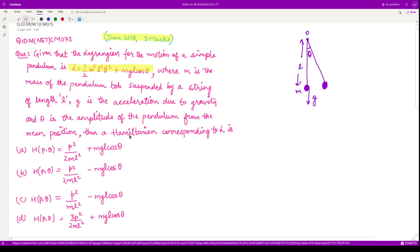So they are asking, what is the Hamiltonian corresponding to this l? So out of these four, what is the value of h? The first thing that we have to do is to access what would be the generalized coordinates.